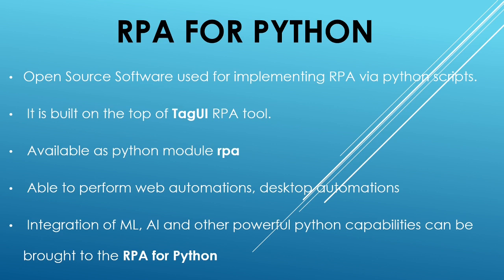To use RPA for Python we have to install it as a module. To install it we just use pip install RPA - so the name of the module is RPA. If you type pip install RPA you will be able to install RPA for Python. Like other RPA platforms it is able to perform web automation, desktop automation, etc. I have actually done certain use cases around RPA for Python which I had posted in my YouTube channel as well.